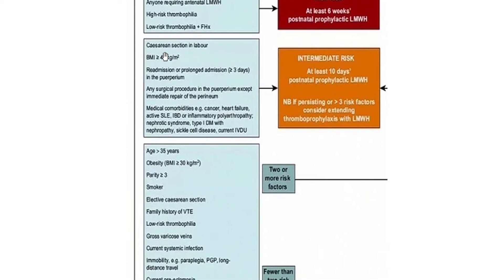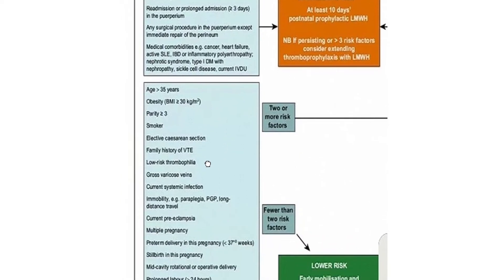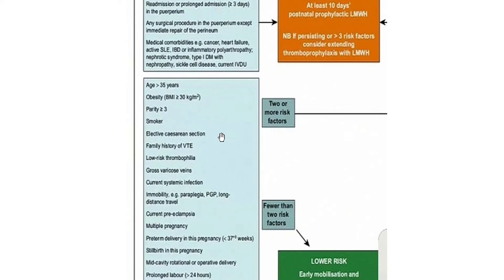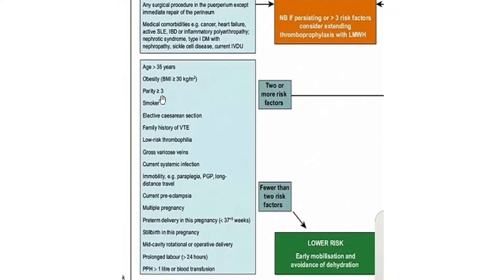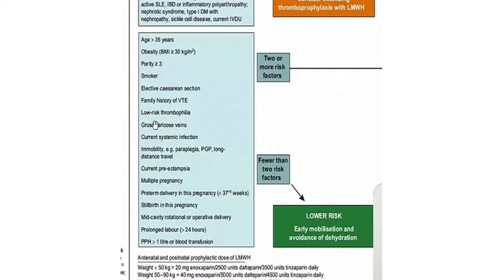Caesarean section in labour — we are not told about that. BMI — not provided. Readmission or prolonged admission — no. Any surgical procedure — not told. Medical comorbidities — our patient has no past medical history, so that section is excluded. Age over 35 — our patient is 42, so she fulfils that criterion. Parity greater than three — this was her fourth delivery, so she fulfils that too. Smoker, elective caesarean, family history — no information. Postpartum haemorrhage greater than one litre — our patient lost 1200 ml, so she fulfils this criterion.